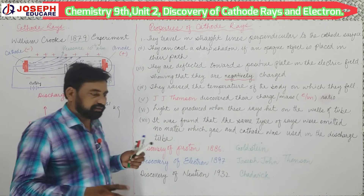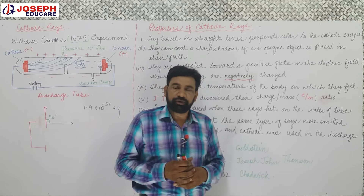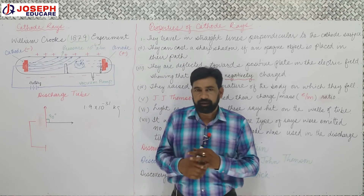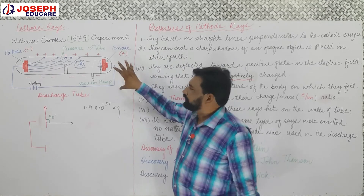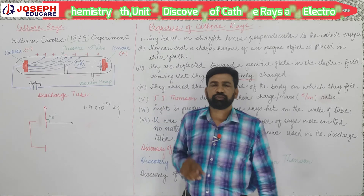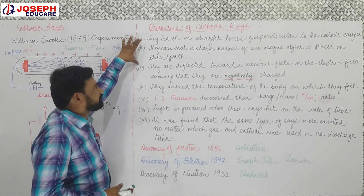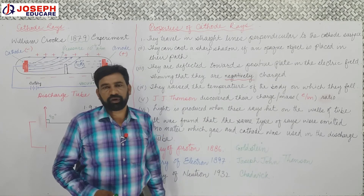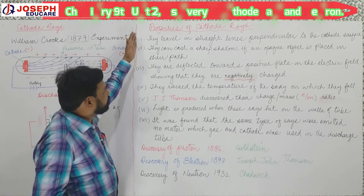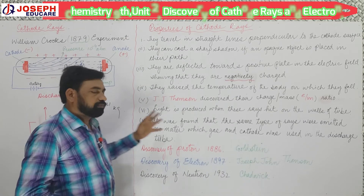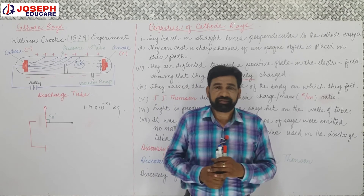These rays are independent — they are the basic part of the atom. The electron has a mass of 1.9 × 10 to the power of negative 31 kg. This is how the discovery of the electron was done by J.J. Thomson, and in 1906 he was awarded the Nobel Prize. The discovery of the neutron was made by Chadwick in 1932. In exam questions from any board — Federal, Punjab, Sindh, KPK — the common questions are: write the structure of the discharge tube, write two properties of cathode rays, or list the properties of cathode rays.